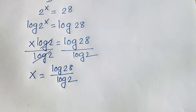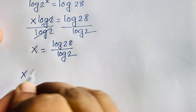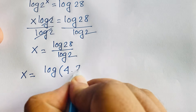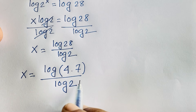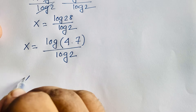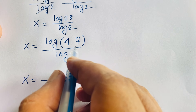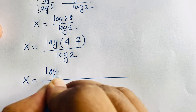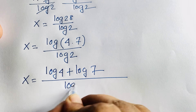Now we can simplify: x equals log 28 over log 2, which is log(4 times 7) over log 2, since 4 times 7 equals 28. Using the logarithm rule log(ab) equals log a plus log b, this becomes (log 4 plus log 7) over log 2.